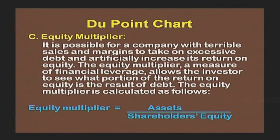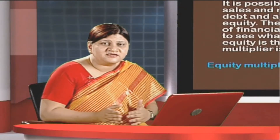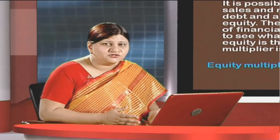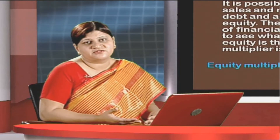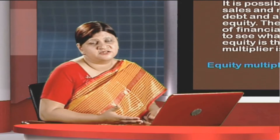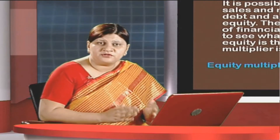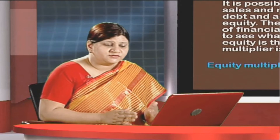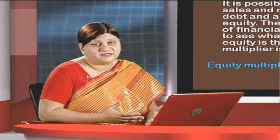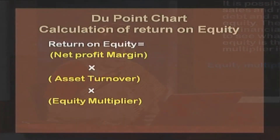The equity multiplier indicates how much debt is being used to generate revenues. It allows investors to see the proportion of return on equity that is the result of debt. That means if return on equity is shown as higher, we can analyze how much of it is because of debt. Financial leverage is being used, and the same formula — either on an income basis or balance sheet basis — would be used to ascertain the equity multiplier and find out return on equity.